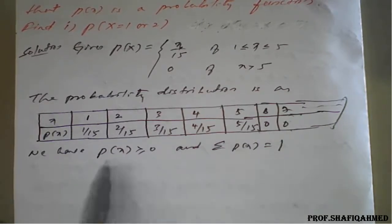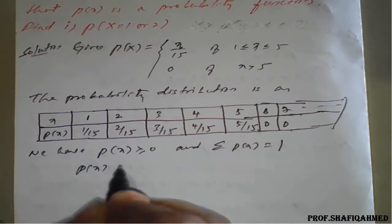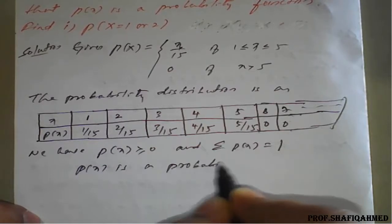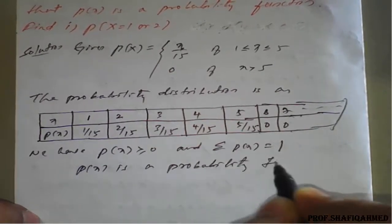Both conditions will satisfy. If both conditions satisfy, we can say that P of X is a probability function.